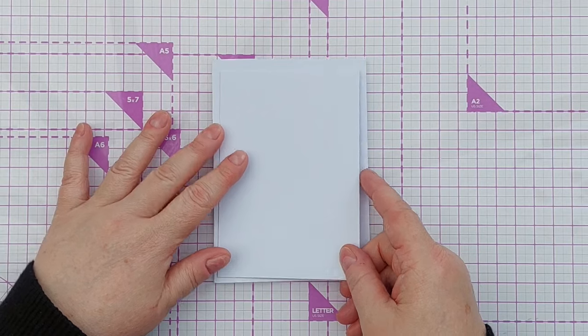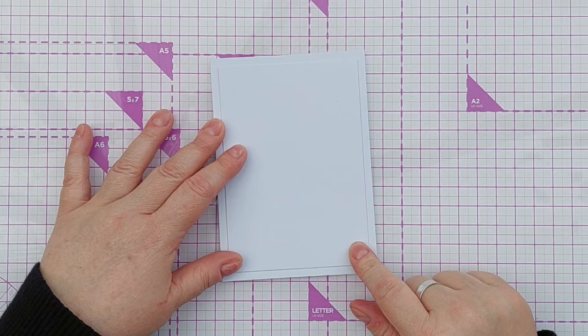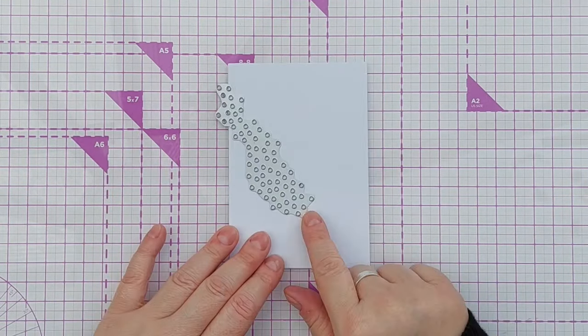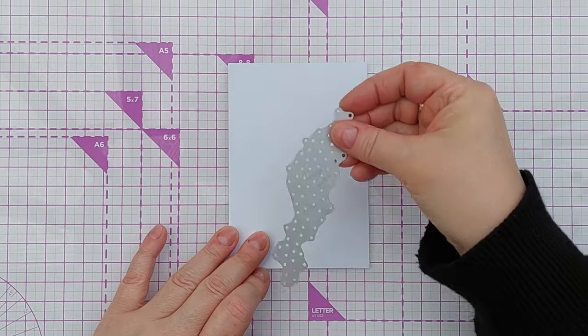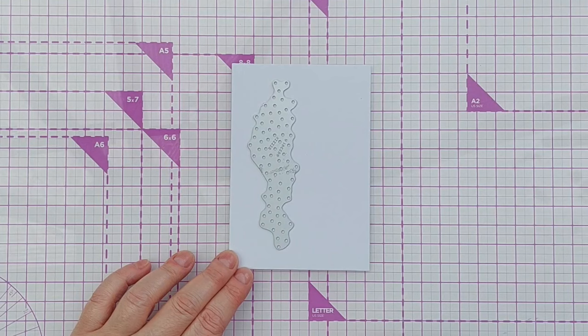My card today is going to be four by six inches approximately and I've got a panel that's going to go on the front to leave a nice border and I'm going to use this spotty die from Sizzix to cut some holes in my panel.